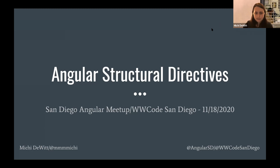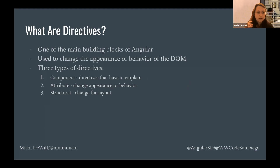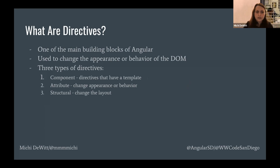So let's dive in. First, what are directives? Directives are one of the main building blocks of Angular, along with things like services, pipes, modules, and components — but components are really just directives. Directives are used to change the appearance or behavior of the DOM, and there are three different types of directives in Angular. The first type, which most people are probably most familiar with, is the component. Components are just directives that have a template.